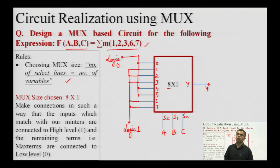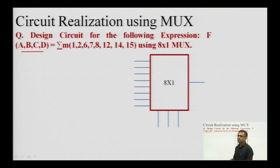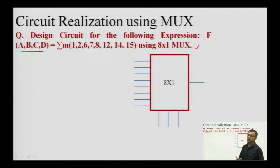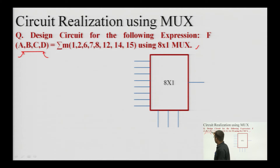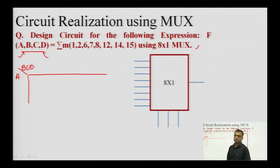Similarly, a 4-variable problem can be realized using a 16×1 multiplexer. However, if the examiner asks to realize such a problem with a smaller 8×1 multiplexer, we have 4 variables A, B, C, D but only 3 select lines. That means one variable must be eliminated. It is convenient to eliminate either the LSB or the MSB. If we eliminate the MSB variable A, then B, C, D are used as the 3 select lines, and B, C, D can take 8 sets of values from 000 to 111.